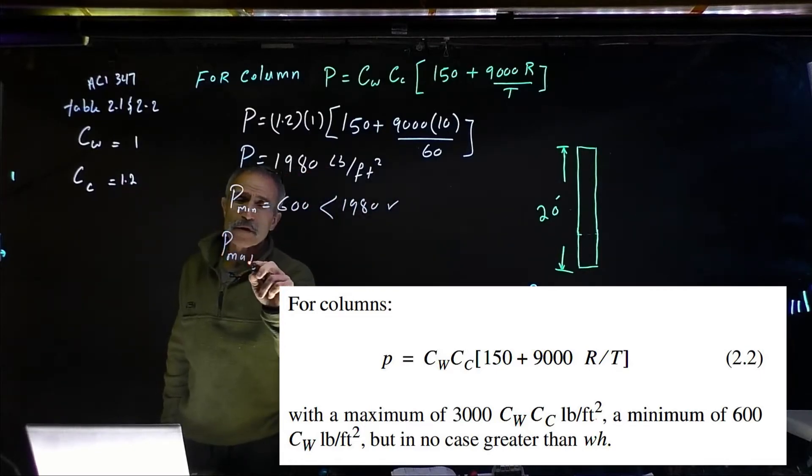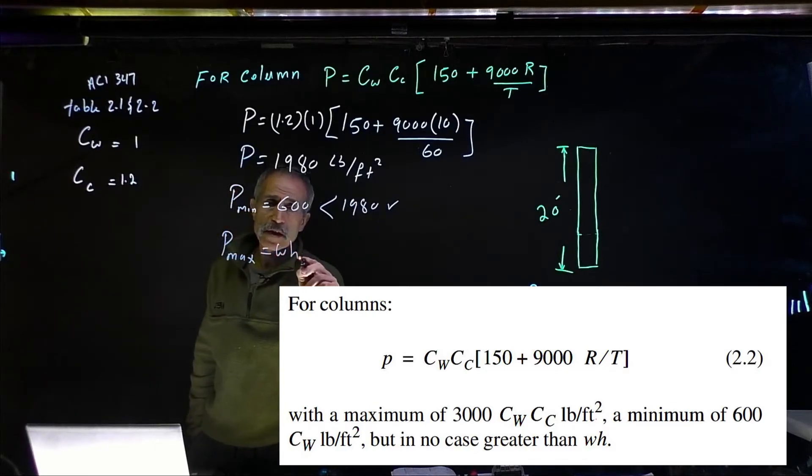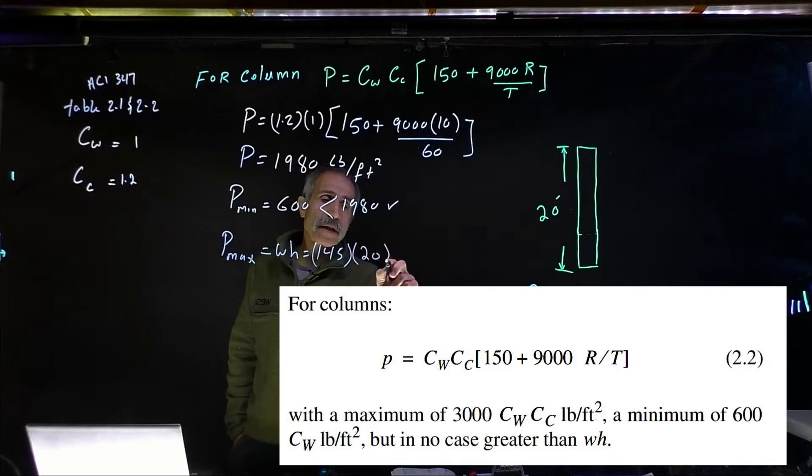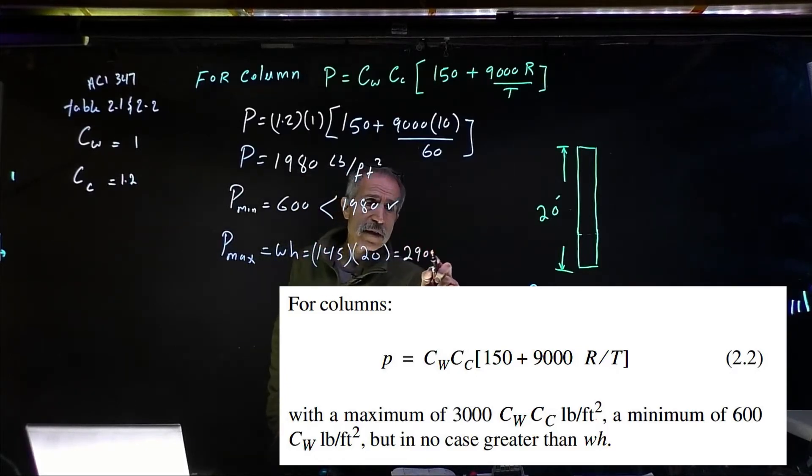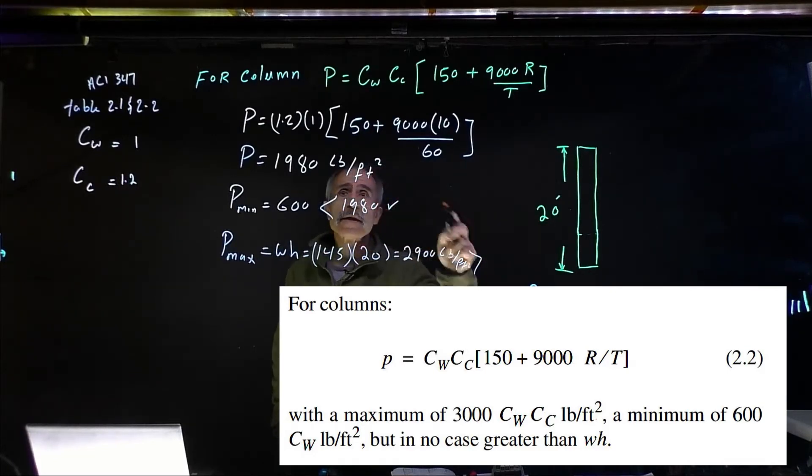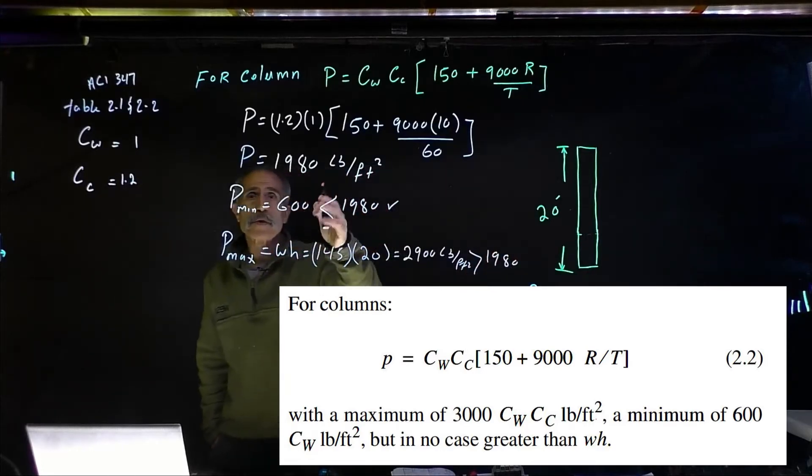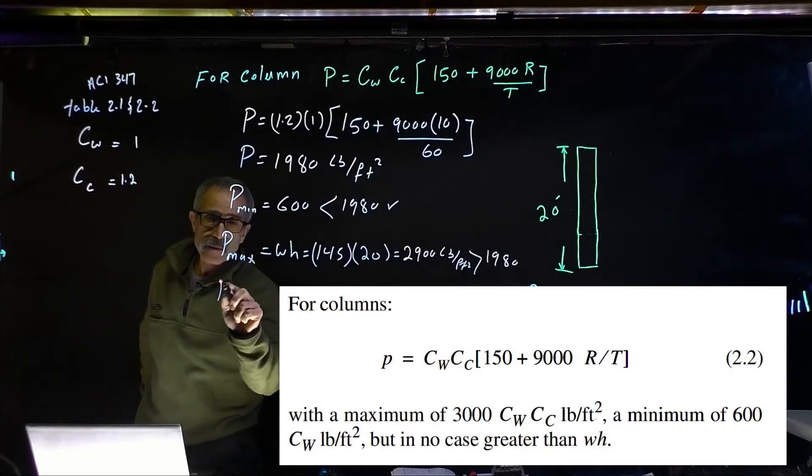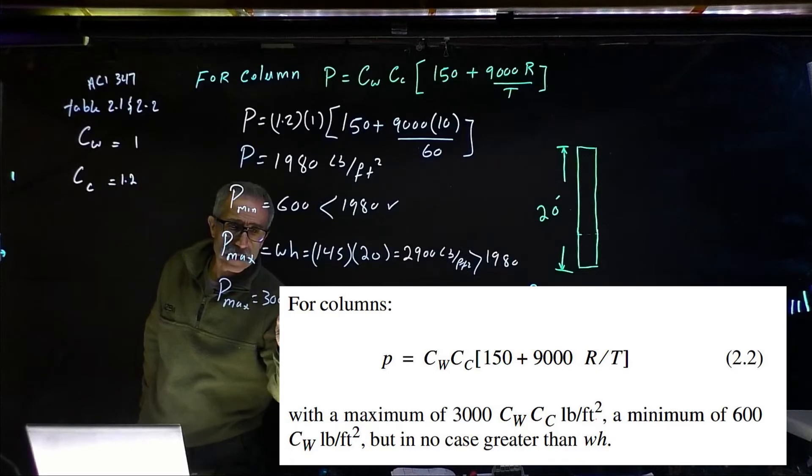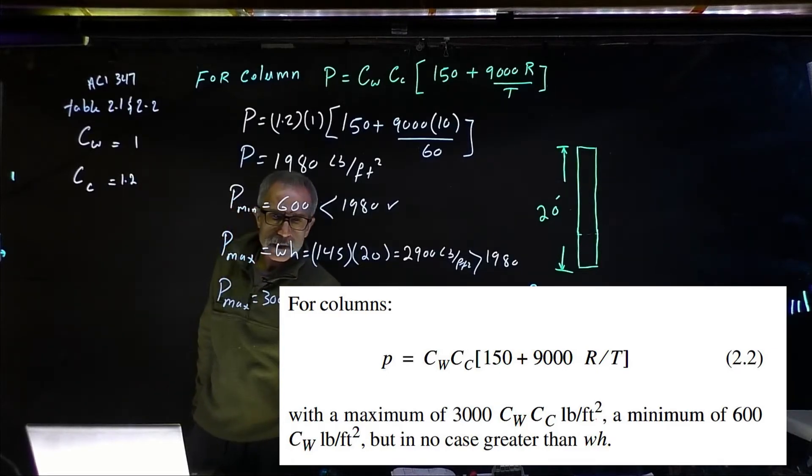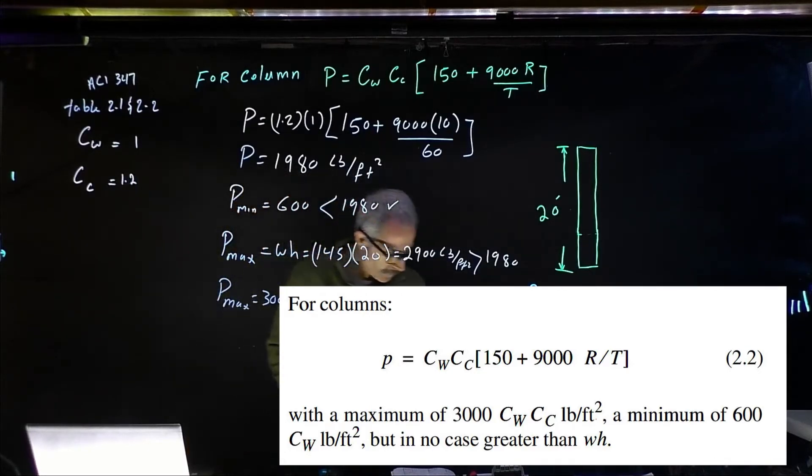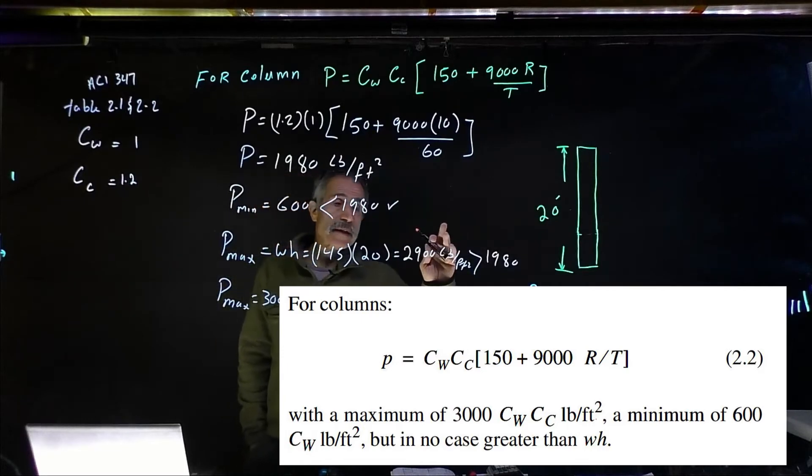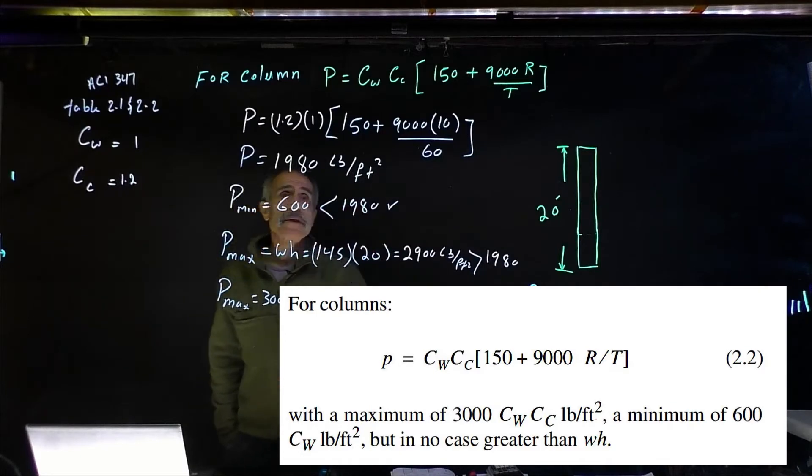And then the Pmax, they gave us two different numbers. I just use the W times H one which is equal to 145 pound concrete multiplied by the height equal to 20, and that will give me 2,900 pounds per square foot which is more than 1,980. So that's good, it stands between that. If you look at the code, they got another one. It says for Pmax also you can use 3,000 times Cw and Cc, which comes out to 2,998. But it says no more than W times H, that's why we're using this. So our maximum is going to be 1,980 that's going to control for here.